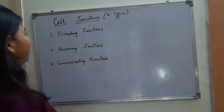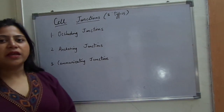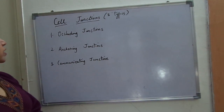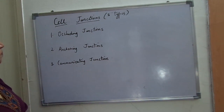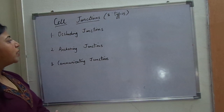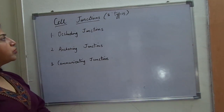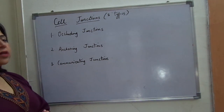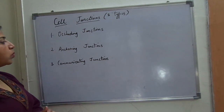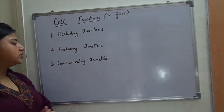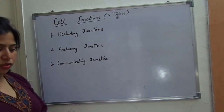Hello everyone, welcome to BioCarryOn. Today we are going to discuss a topic that is known as cell junctions. Three types of cell junctions are there: one is occluding junctions, second one is anchoring junctions, and third one is communicating junctions.